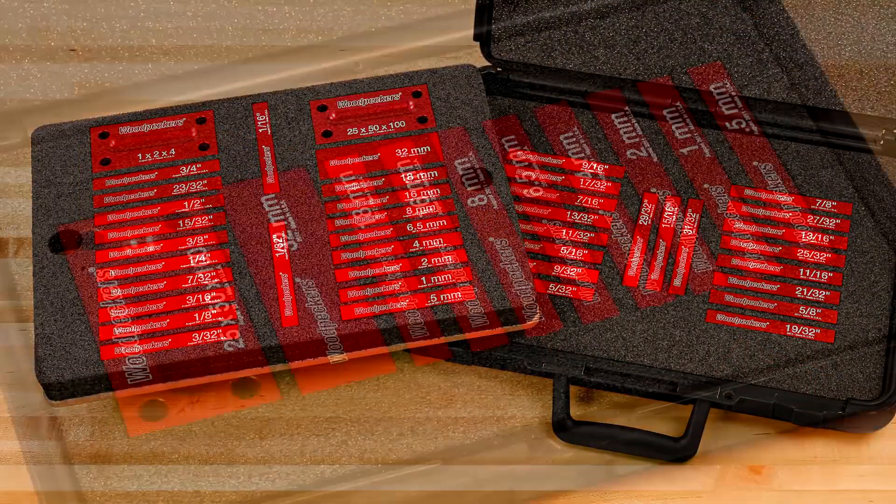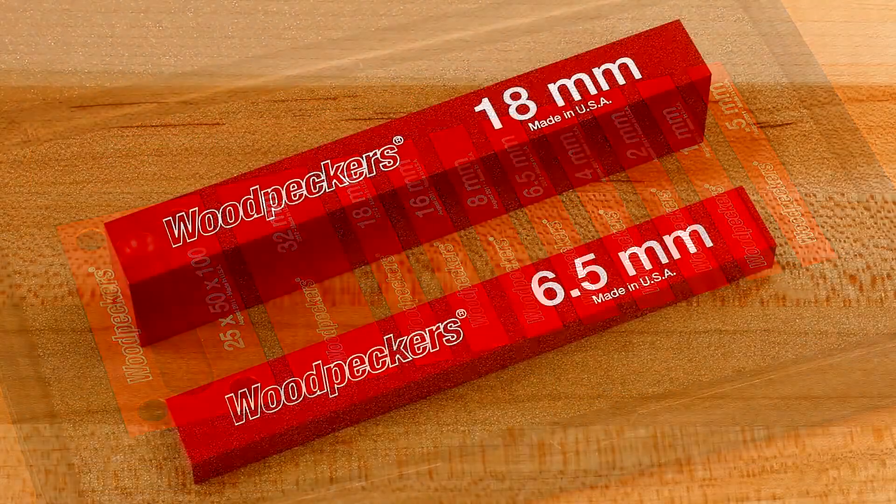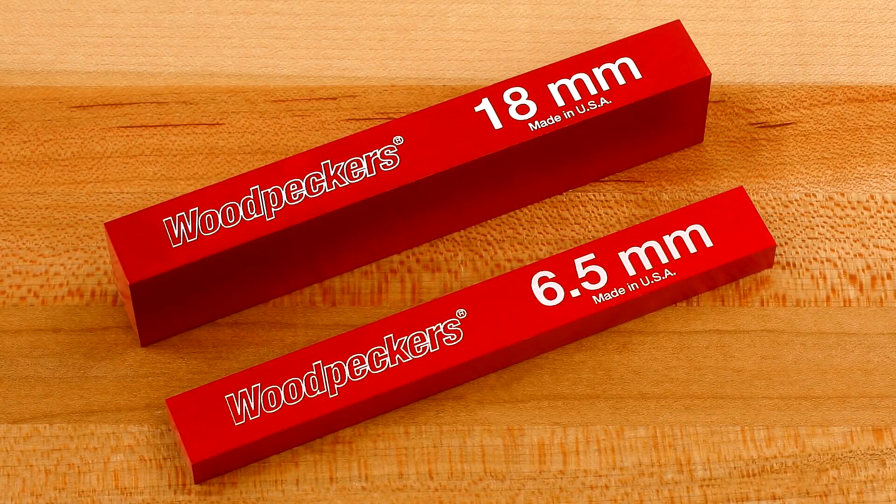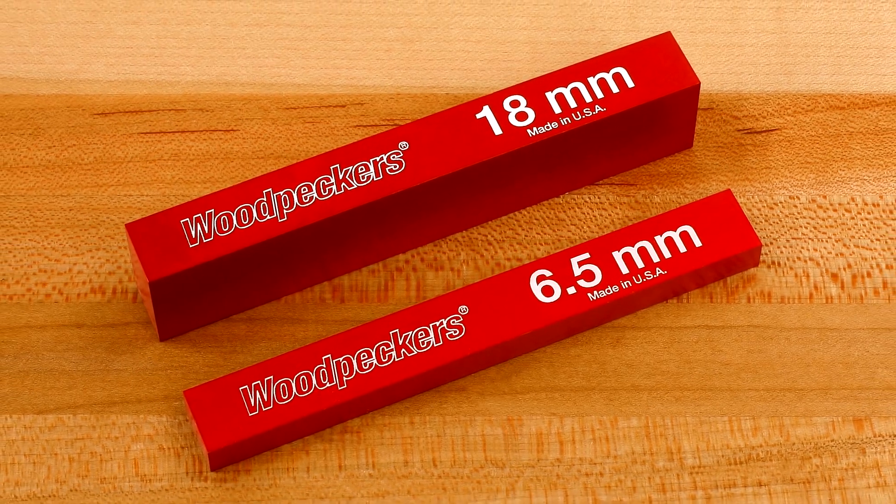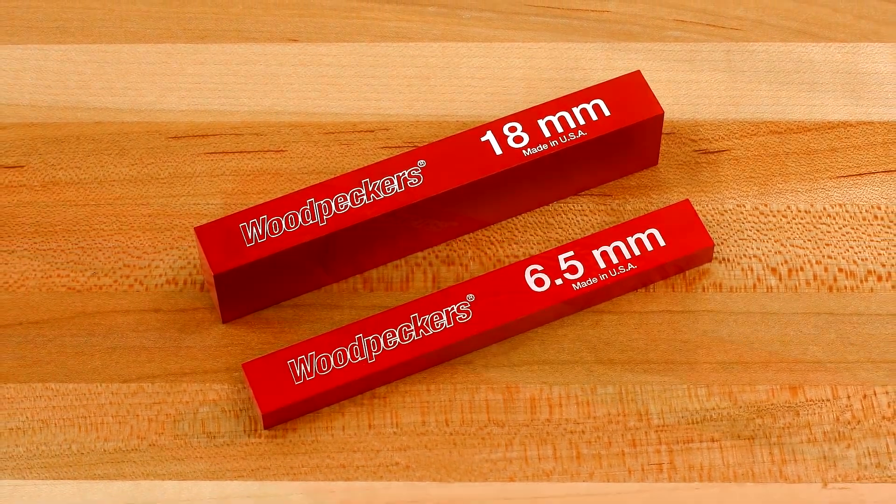The Jumbo Deluxe Set and the metric set even include 6.5 and 18 millimeter blocks, so most common plywood thicknesses can be matched.